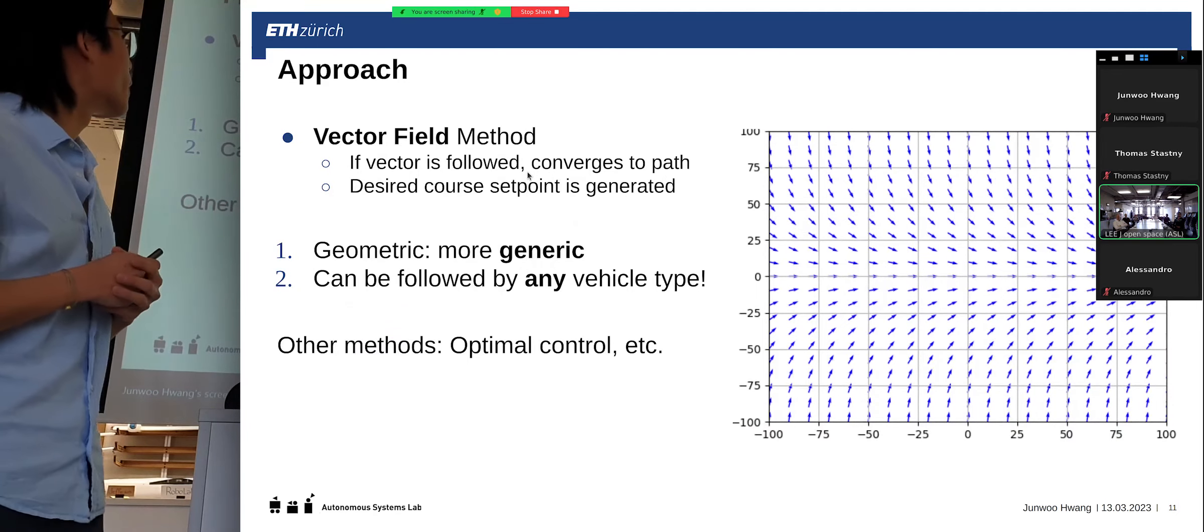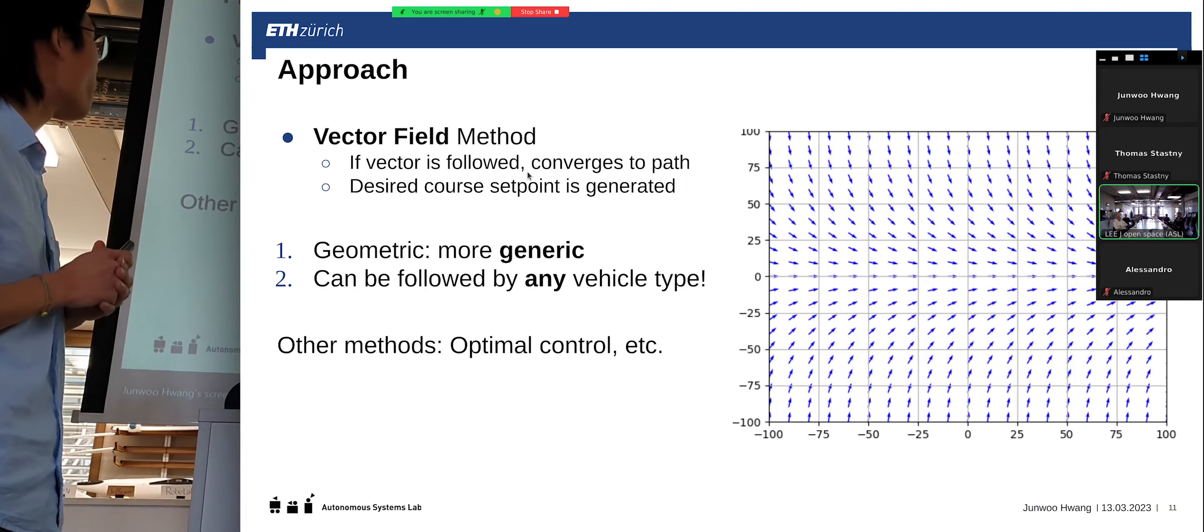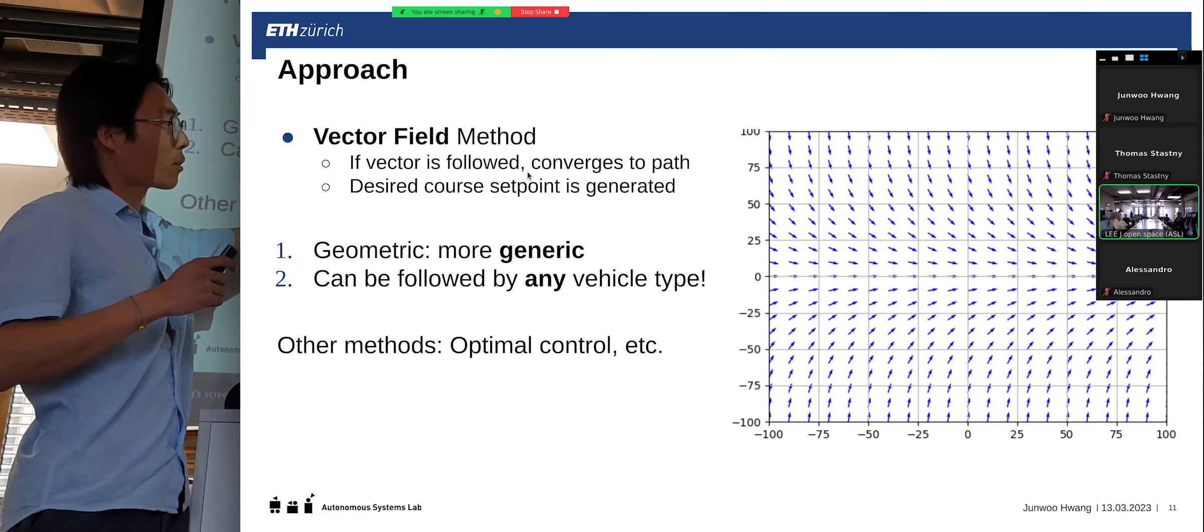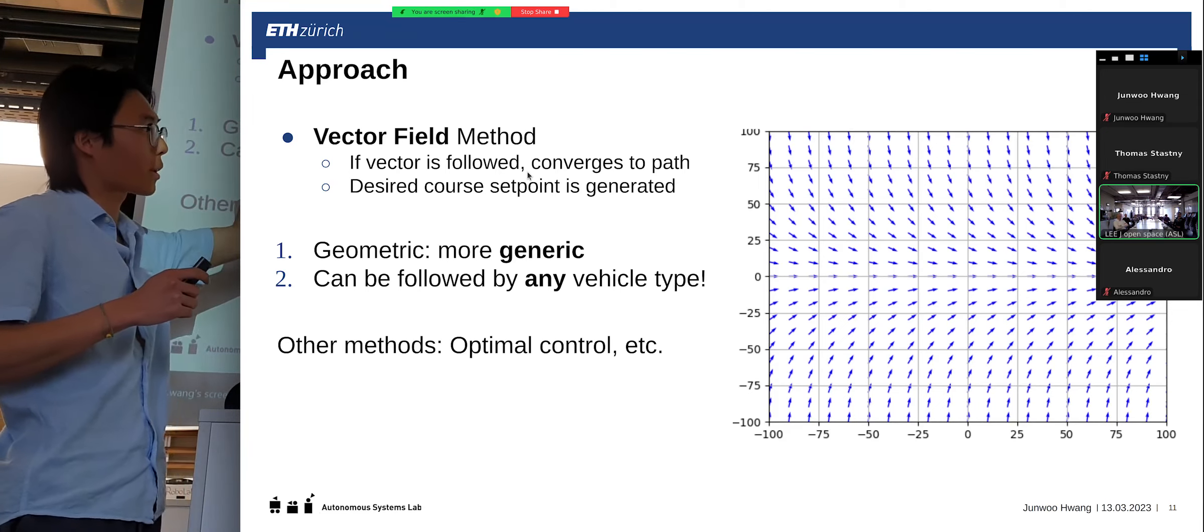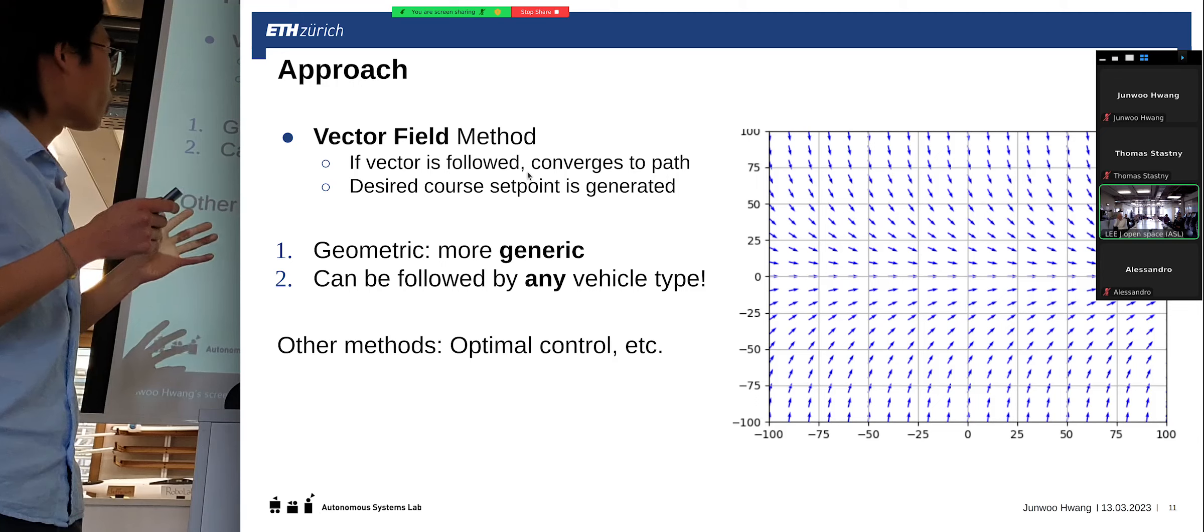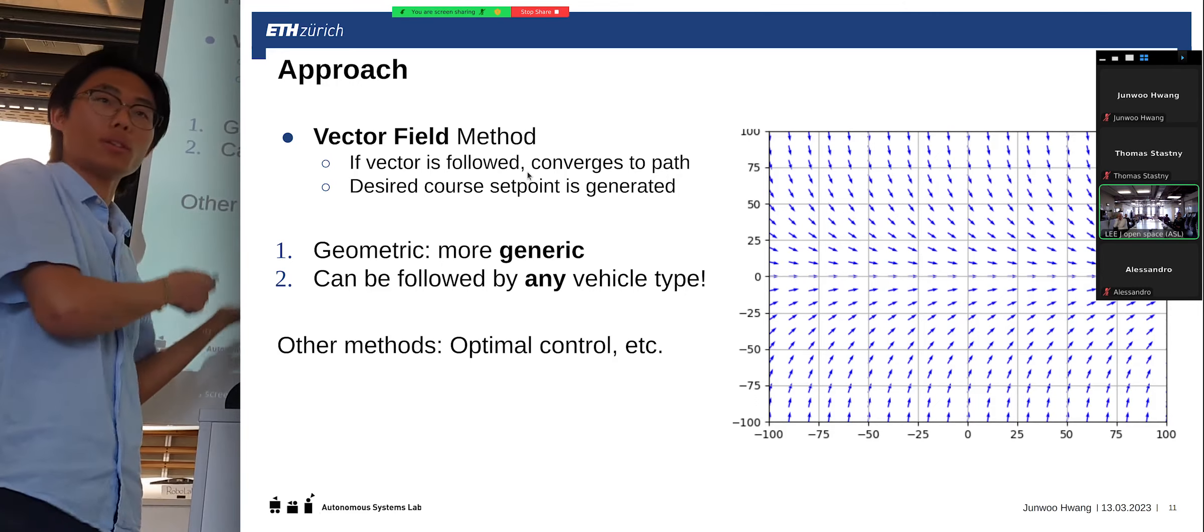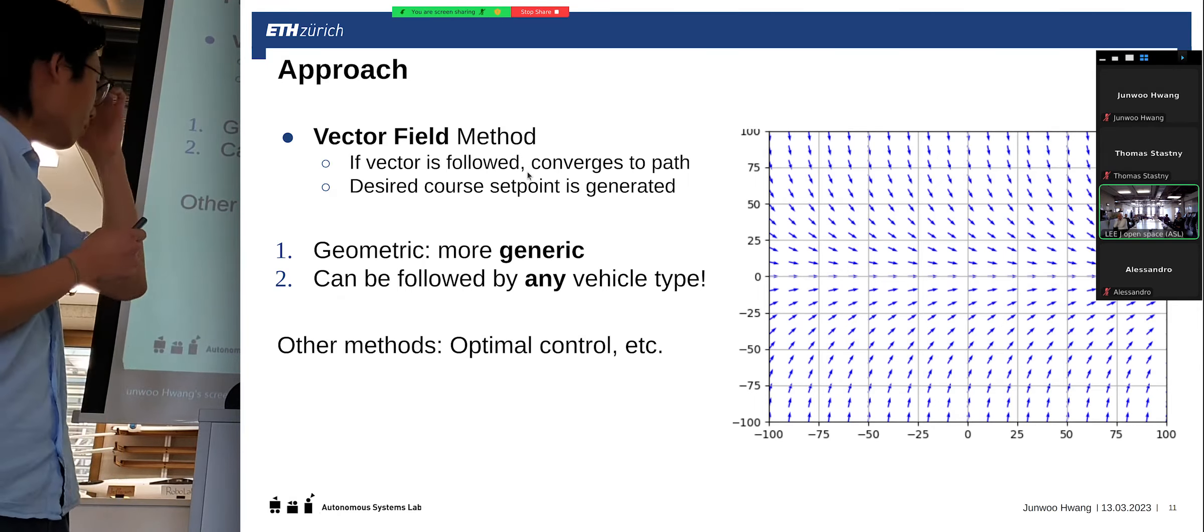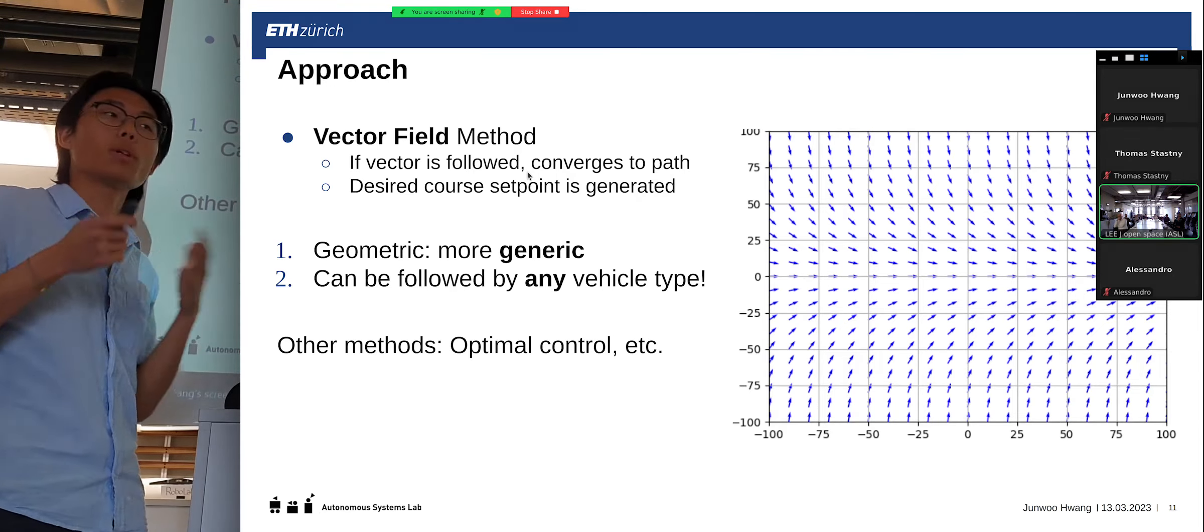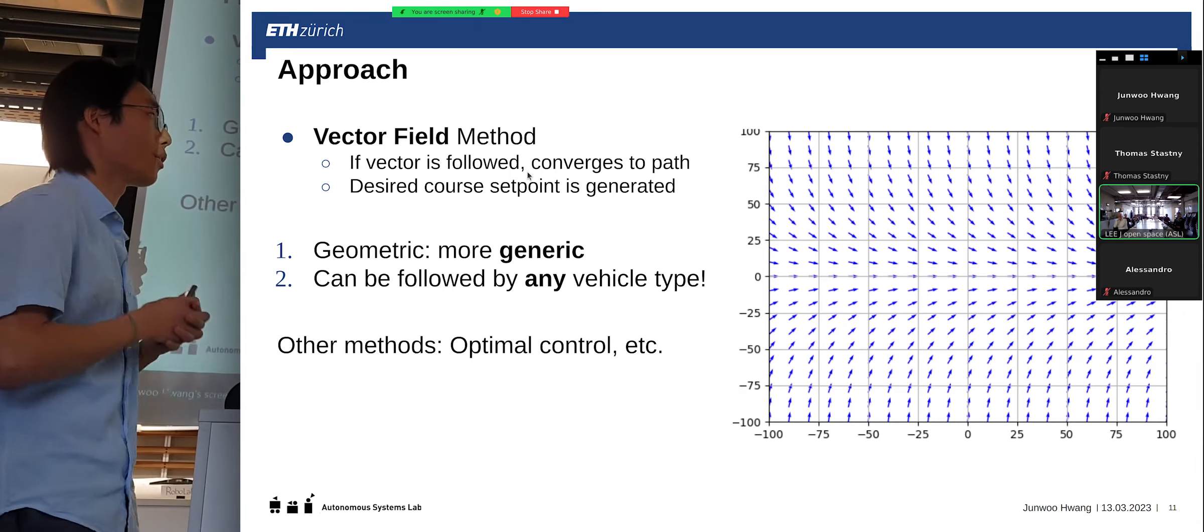So the approach that I took is a vector field method, which is basically the basis of the fixed-wing guidance that I referenced. The reason is because it's a very simple approach where you have a path going to the right of the screen, and then you can have a vector that defines where the vehicle should be moving over the ground. And it's a very generic algorithm that is geometric, so you can extend this to different types of vehicles, which is ideal for our case. And also, this doesn't depend on each vehicle type, such as which is the case for optimal control or model predictive control, and this is a simple use case.